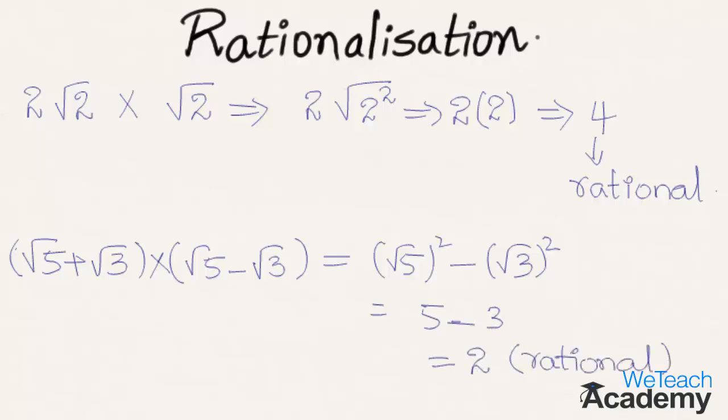So if the product of two surds is a rational number, then each of the two surds is called the rationalizing factor of the other. Root 2 is the rationalizing factor of 2 root 2, and root 5 minus root 3 is the rationalizing factor of root 5 plus root 3.